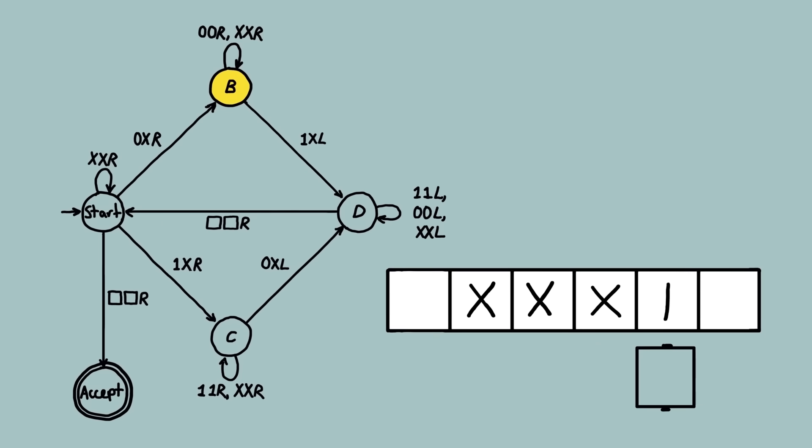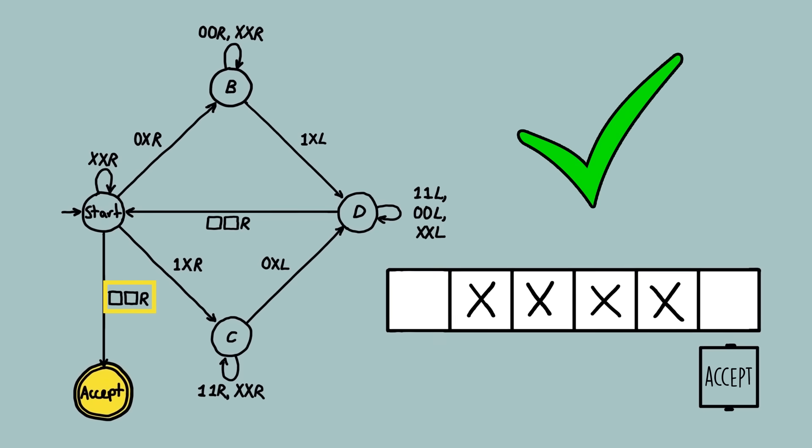After another round of this, the machine only encounters Xs, so keeps moving right and remains in the start state. When it reaches a blank, it moves into the accept state. And we know that this list of symbols does have an even number of ones and zeros. So that's how one of these machines would work.